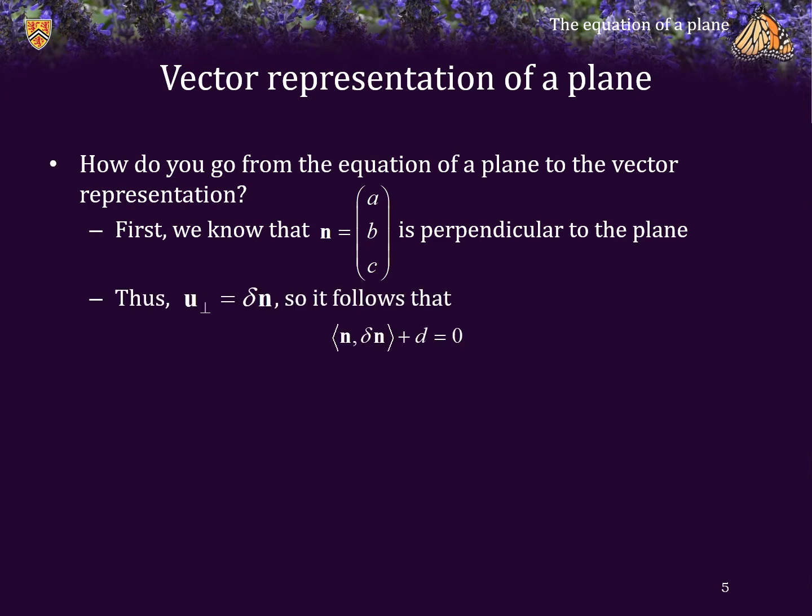Consequently, U perp must be a scalar multiple of this vector. So, let's call it delta times the normal vector.